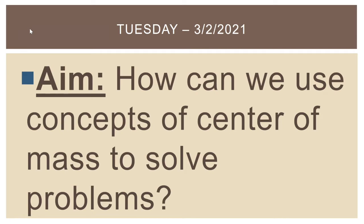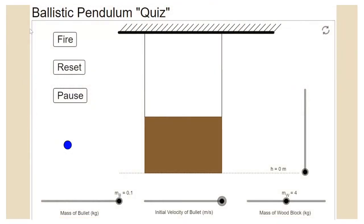Before we do that, I want to briefly review the problem posed at the end of yesterday's video. It was a ballistic pendulum problem. What I asked you to do was set the mass of the bullet all the way to the right, making it 0.1 kilograms, set the initial velocity of the bullet all the way to the right, and keep the mass of the wooden block at 4 kilograms.